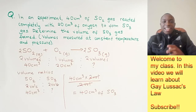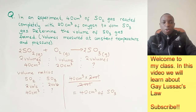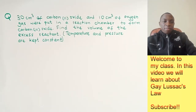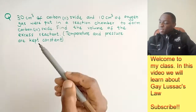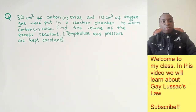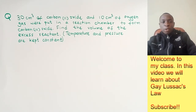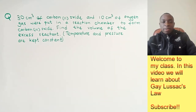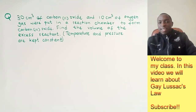That was a simple example. Let's get to another example to expand our knowledge on Gay-Lussac's law. In this second example, we are provided with 30 cubic centimeters of carbon-2 oxide and 10 cubic centimeters of oxygen gas. They were put in a reaction chamber to form carbon-4 oxide. Find the volume of the excess reactant, with temperature and pressure kept constant.